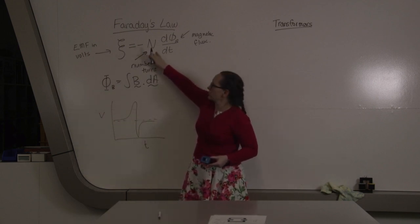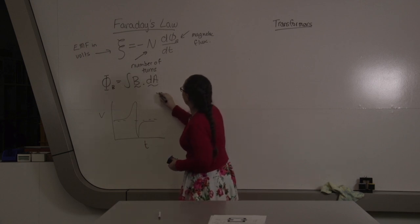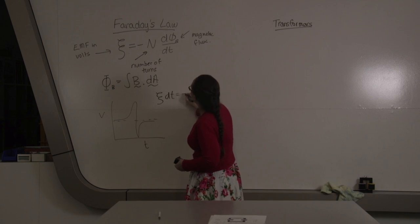Looking at Faraday's law, we can rearrange it to be that the EMF times dt is equal to minus n dφ_b.